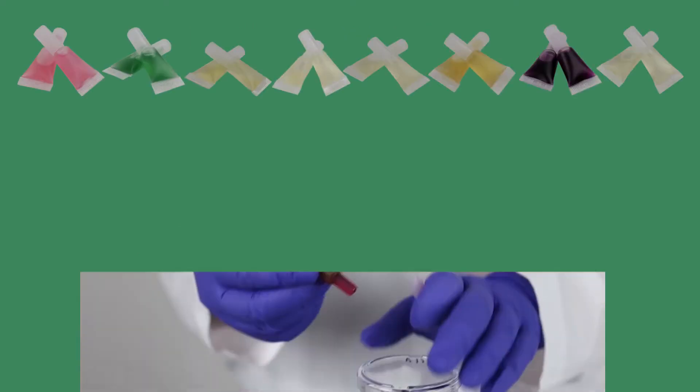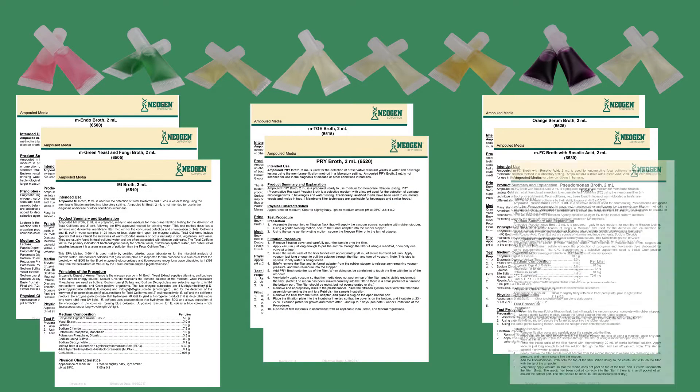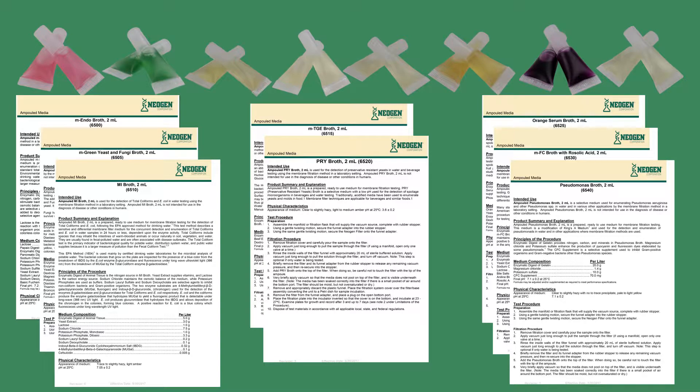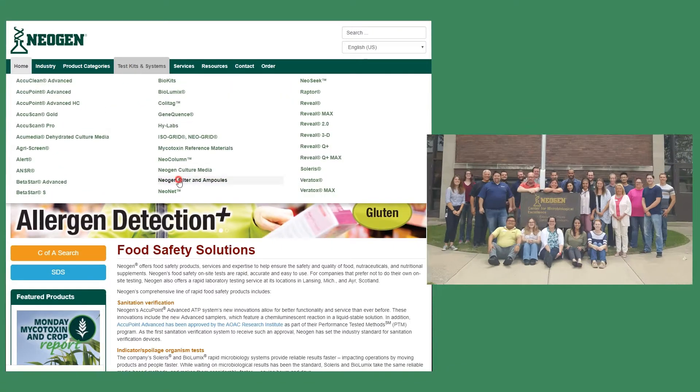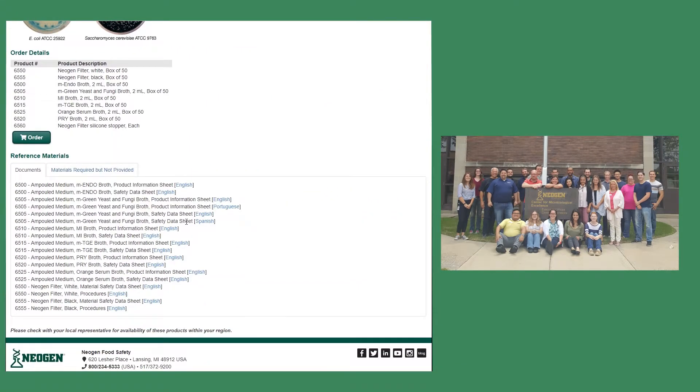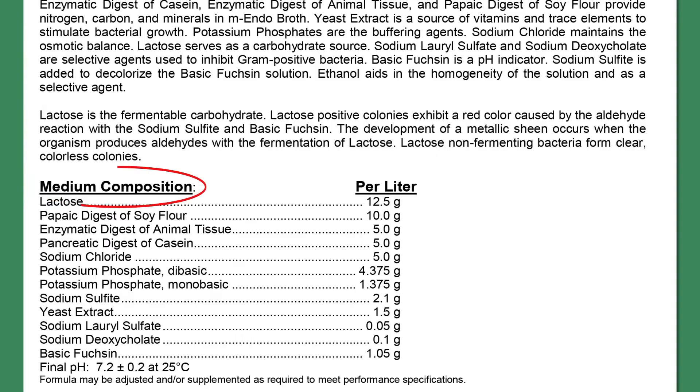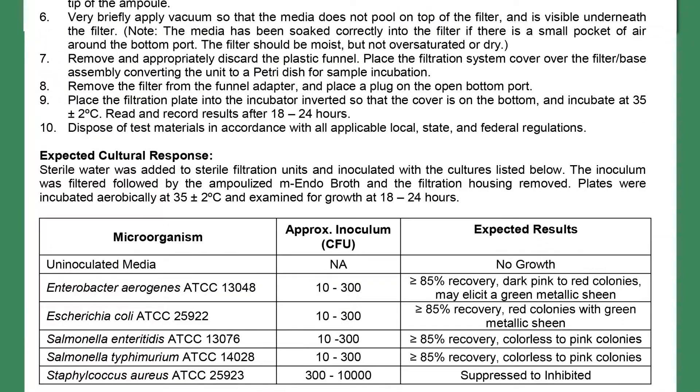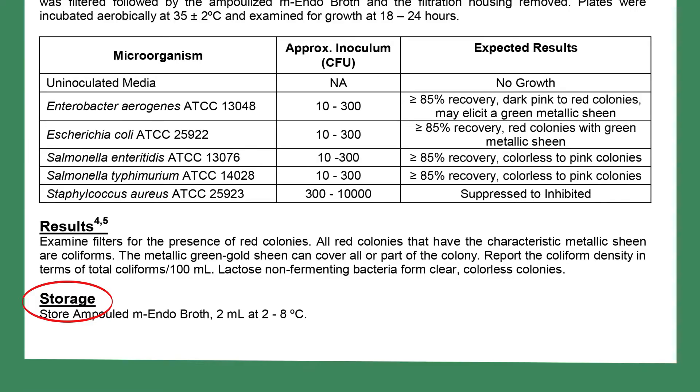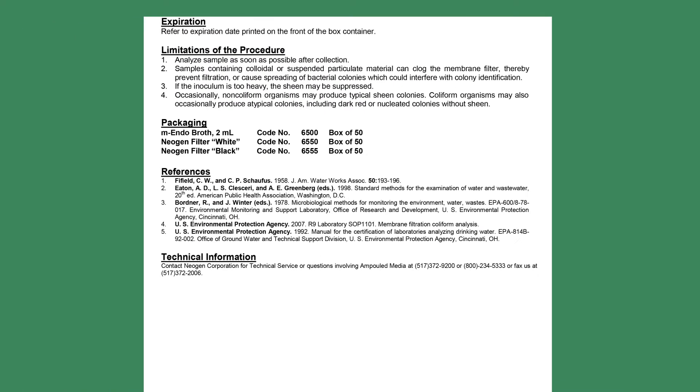Neogen also offers ampulled media specifically designed for use in membrane filtration testing with Neogen filters. Product information sheets provide in-depth information about each ampulled media. These sheets are also available on Neogen's website from Neogen's technical service team or your sales representative. Each sheet contains a product summary, media composition information, physical characteristics, testing procedure, expected cultural responses, storage conditions, expiration, limitations of the procedure, and other useful information.